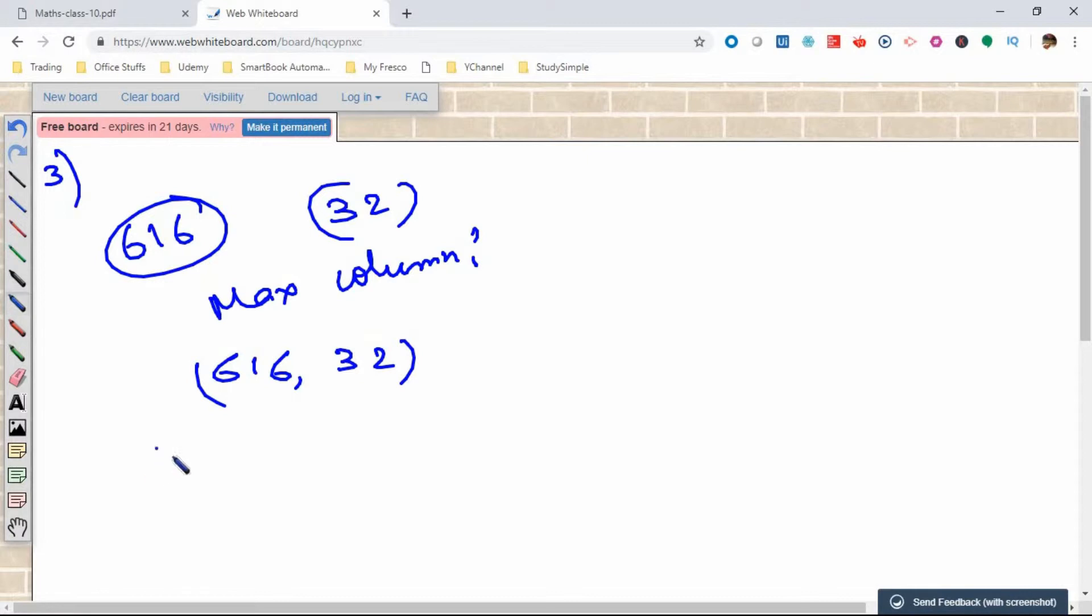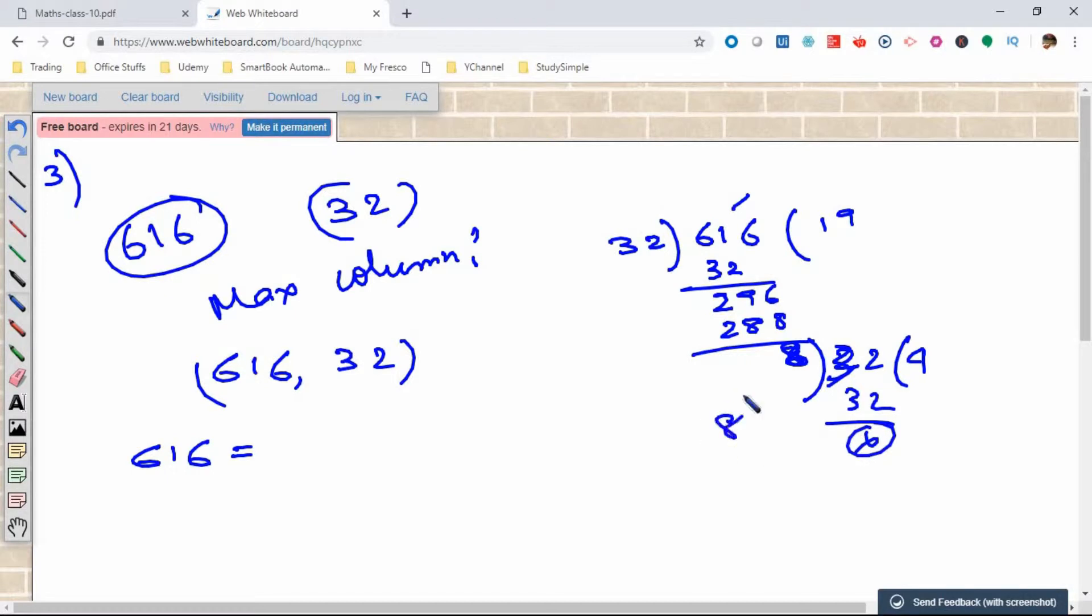We need to divide 616 by 32. This gives us 19 with remainder 8. Then we divide 32 by 8, which gives 4 with remainder 0. So the HCF of 616 and 32 is 8.